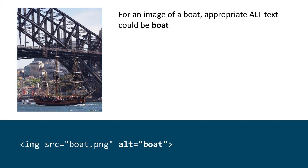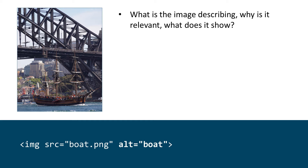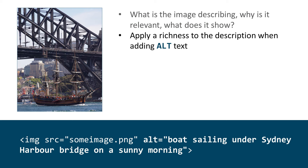For an image of a boat, appropriate alt text could be 'boat,' as after all the image is of a boat. Whilst technically correct, adding such succinct alt text isn't really in the spirit of web accessibility. What is the image describing? Why is it relevant? What does it show? If you were describing the boat to a friend, you would say more than the literal description. Apply that same richness when adding alt text. Why is the image relevant? It may be 'a boat sailing under Sydney Harbour Bridge on a sunny morning' or 'a replica sailing ship leaving Sydney Harbour.' Avoid overly verbose descriptions as well — alt text of a short sentence is probably the upper limit when describing most images.